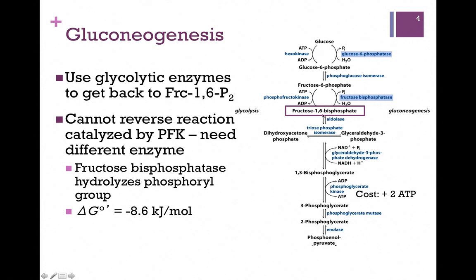We'll get to the product fructose-1,6-bisphosphate, but remember that's the product of PFK in glycolysis, and that's an irreversible step. So we can't ask PFK to reverse the reaction. For that we need a different enzyme, fructose bisphosphatase, and that clips off that phosphate to form fructose-6-phosphate. This is a very favorable reaction and represents an irreversible step.